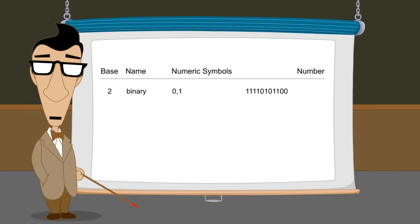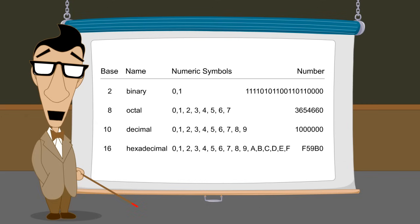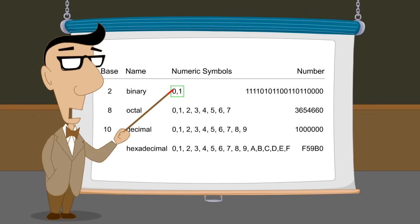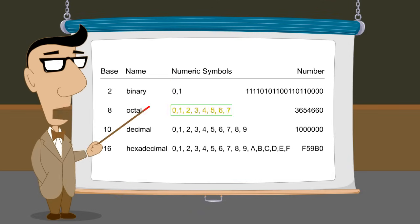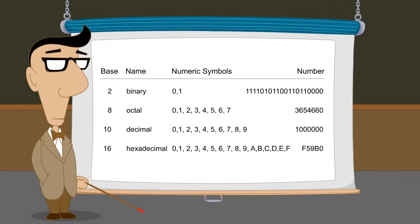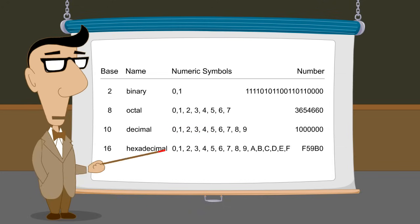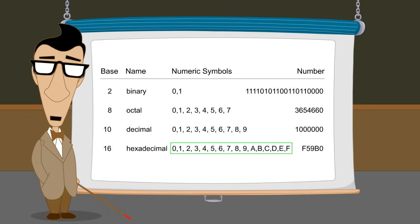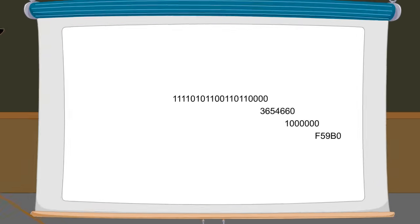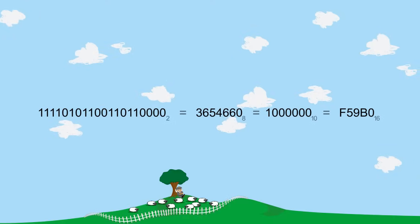So we have seen how the same natural number can be represented in base two using two numeric symbols, base eight using eight symbols, base ten using ten symbols, and base sixteen using sixteen symbols. But no matter how we choose to write this natural number, it still represents the same quantity.